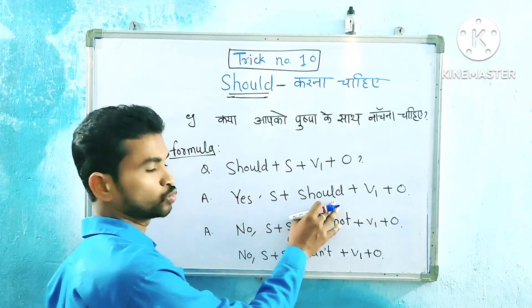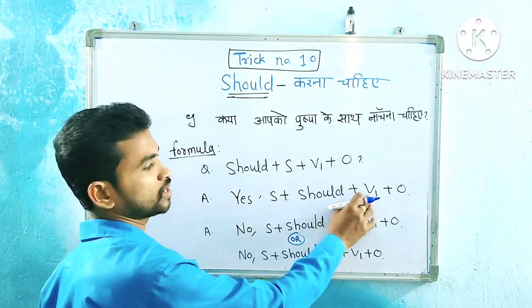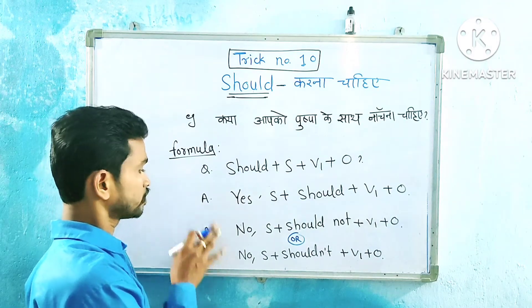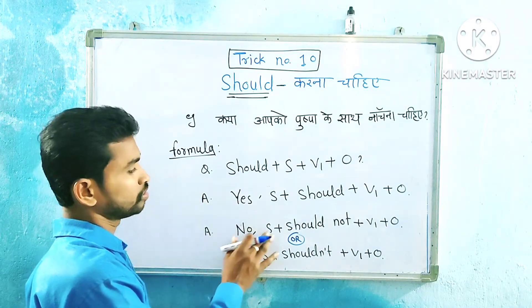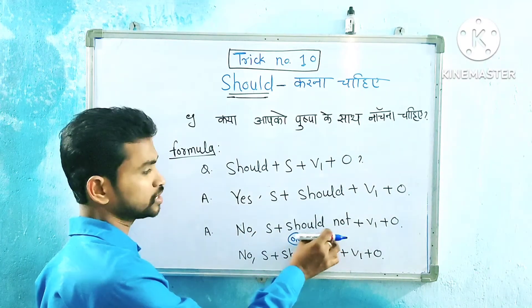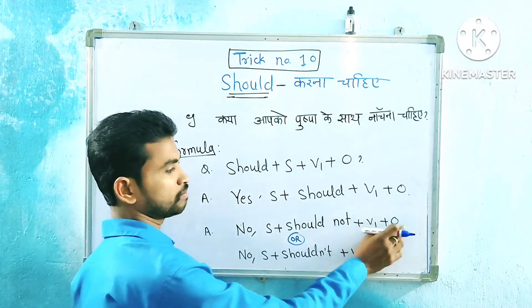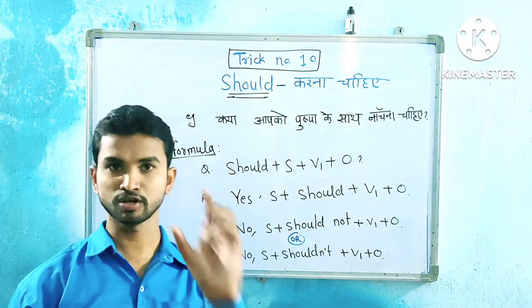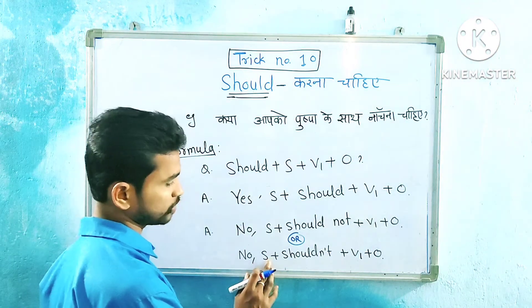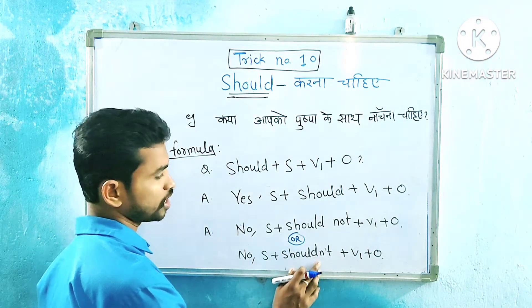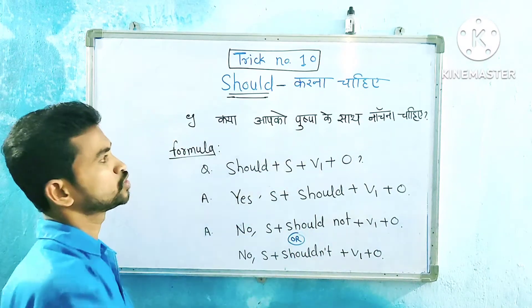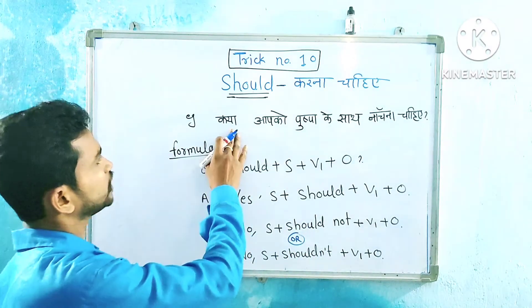For positive sentences: Subject + should + verb. For negative sentences: Subject + should not + verb. 'Should not' can also be written as 'shouldn't.' This is the basic structure you need to remember.